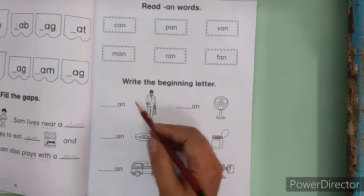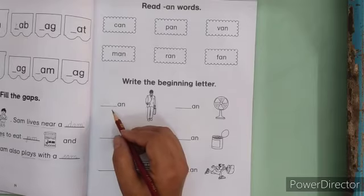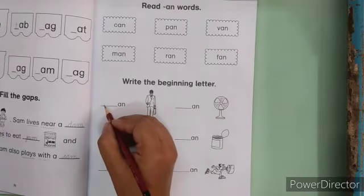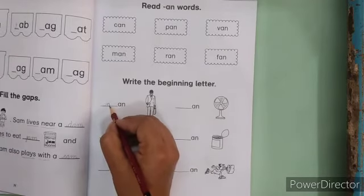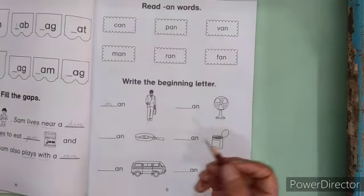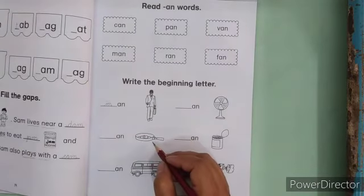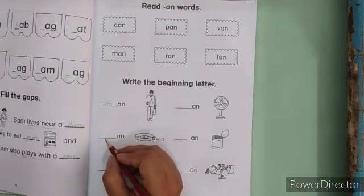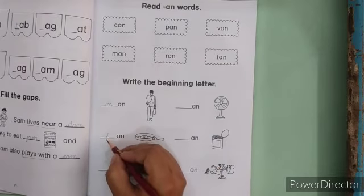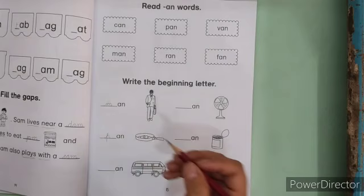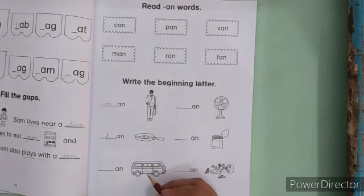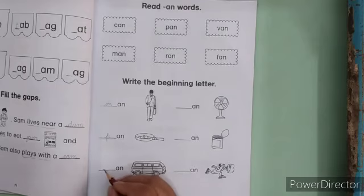What is the first picture? Man. So which sound is missing? So what we write here? M. What is the next picture? Pan. So what we write here? Which sound is missing? It's P. Next picture is van. So which sound is missing? V.